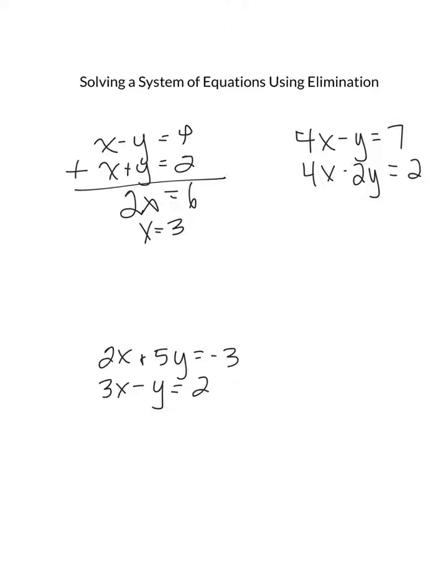To find out what y equals, just plug your x value into one of the equations. I'm going to plug it into this one here because my y is going to be positive, so I'm going to get 3 plus y equals 2. Subtract 3 from both sides, y will equal negative 1. So the solution to this system is going to be 3 comma negative 1.